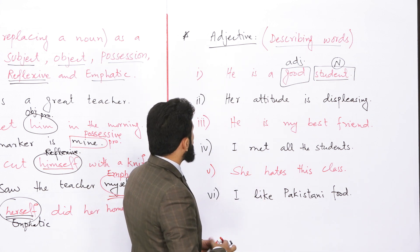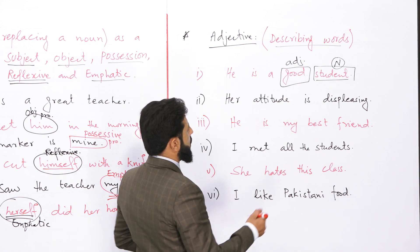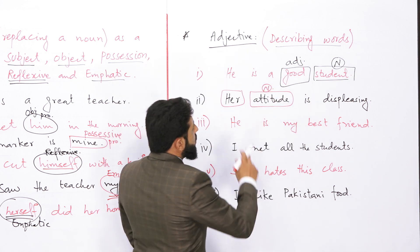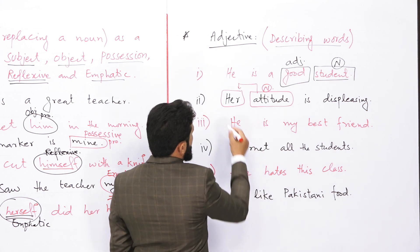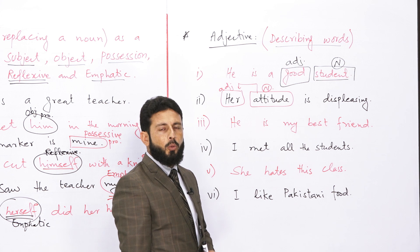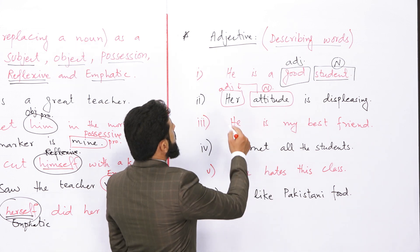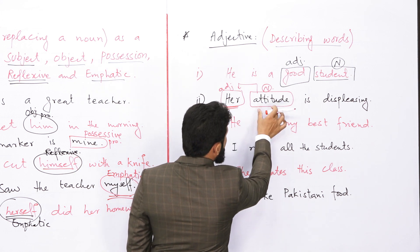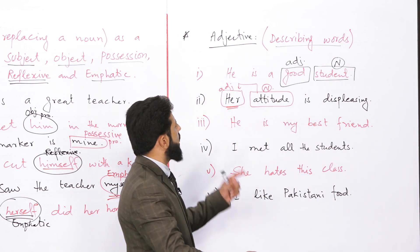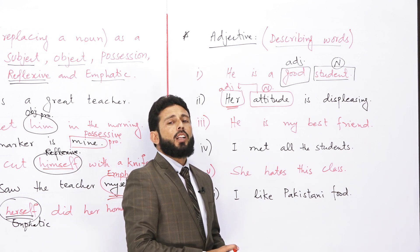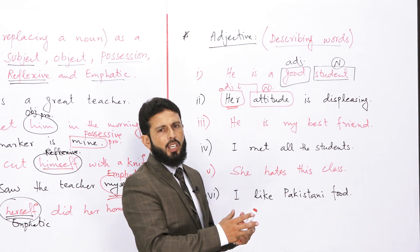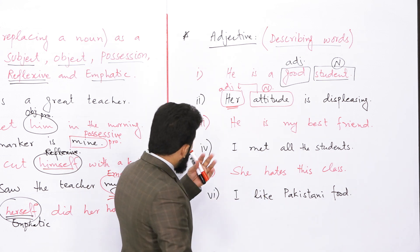دوسرے sentence کو دیکھیں: 'Her attitude is displeasing'۔ 'Attitude' noun ہے لیکن اس کے ساتھ 'her' لگایا ہے اور اس word کو possessive adjective کہتے ہیں — کیونکہ یہ بتاتا ہے کہ attitude کی مالک کون ہے۔ وہ لڑکی ہے اور اس لڑکی کا جو رویہ ہے وہ displeasing ہے۔